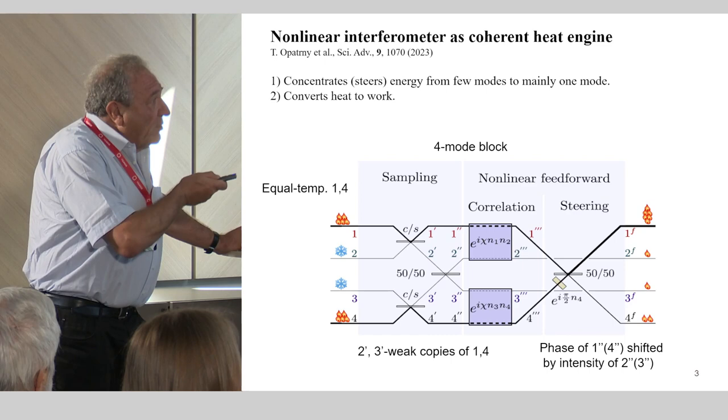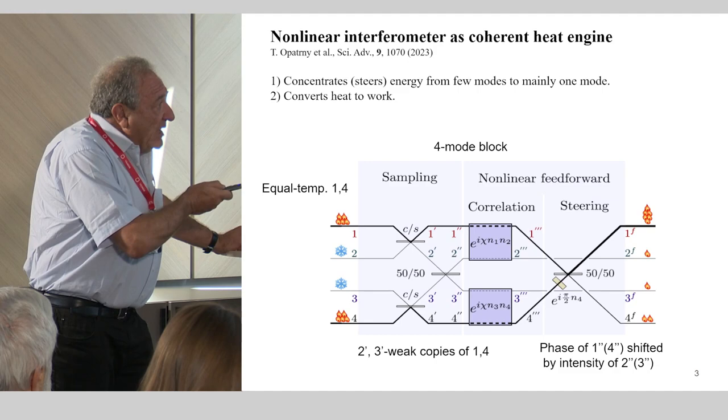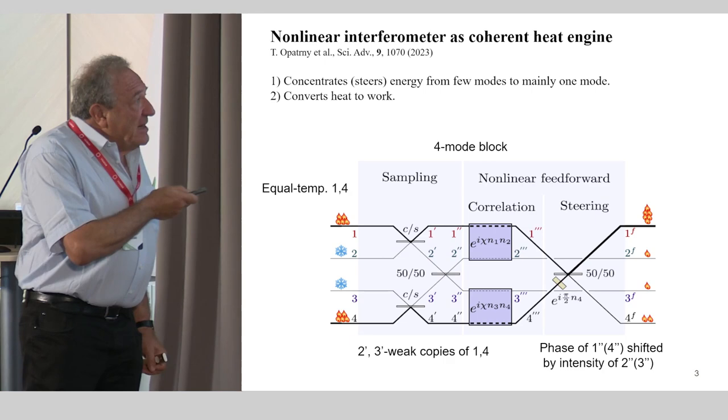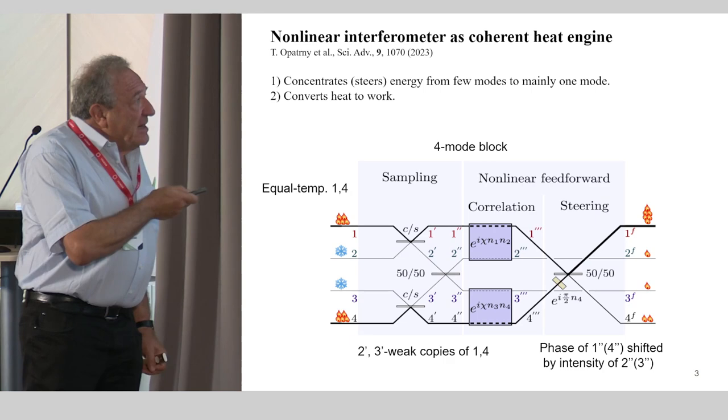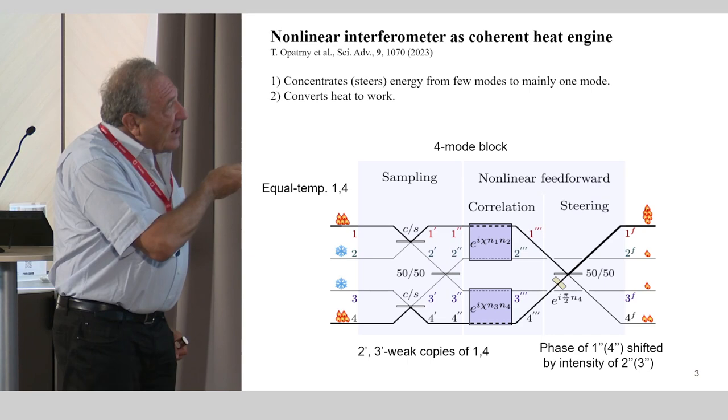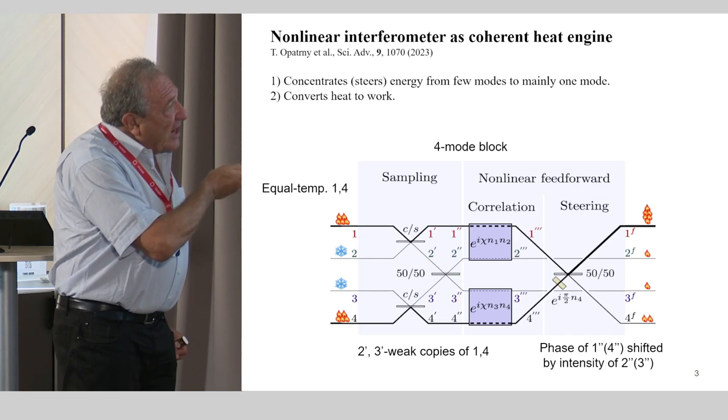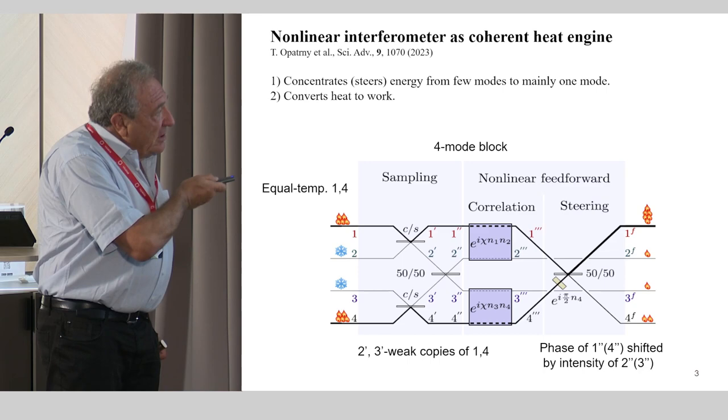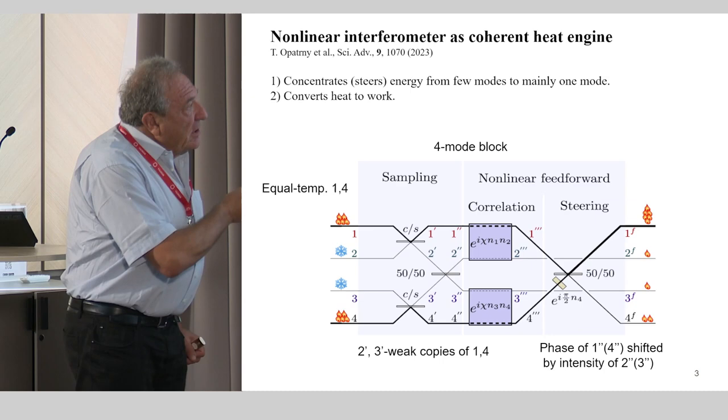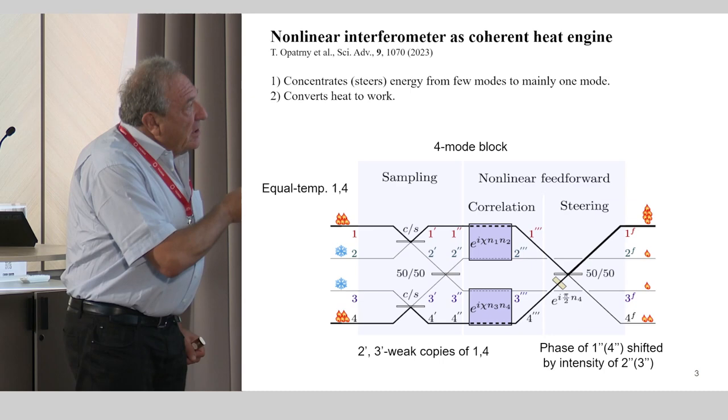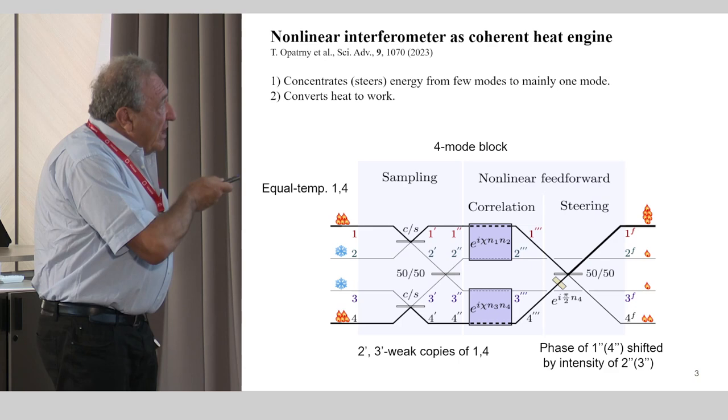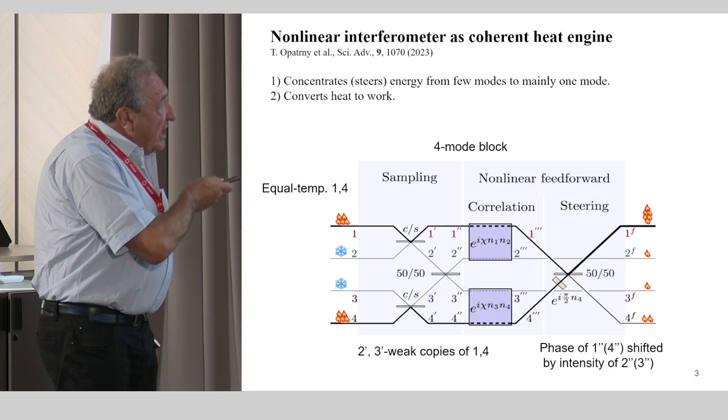If you look at this scheme, it consists of four modes. Two have equal temperature at the input, and two are much colder, preferably at zero temperature. They are passed through beam splitters such that a small fraction of a strong beam goes in, and this small fraction is then a weak copy of the input intensities. These two weak copies are merged at a 50-50 beam splitter, and as they emerge, they bear the correlations between the input fractions.